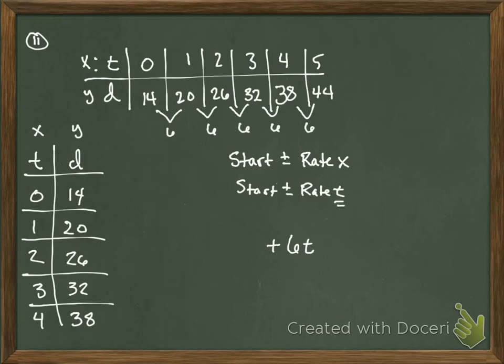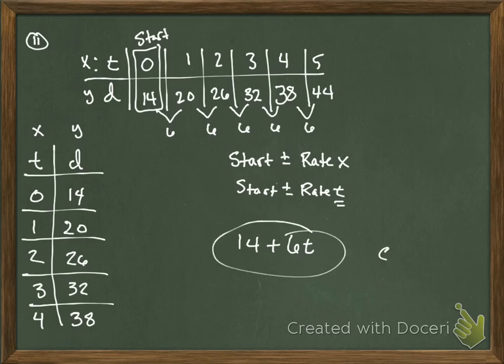So I'm looking at answer choice b, and I'm looking at answer choice c. Now I need to look at where does this thing start? Well, at time of 0, this is where you start. I have 14, so 6t plus 14, or 14 plus 6t, which is answer choice c. Thank you.